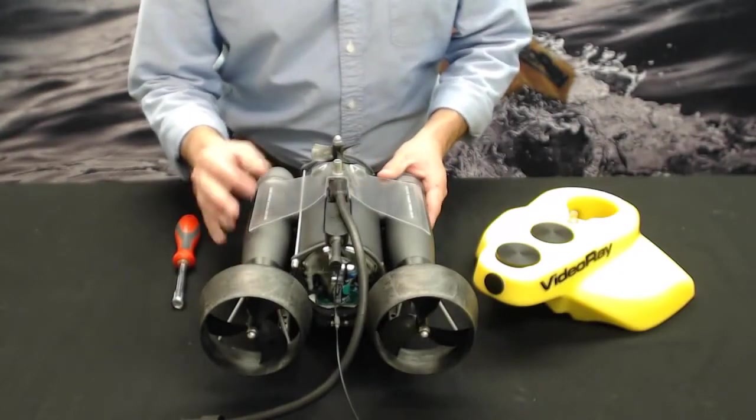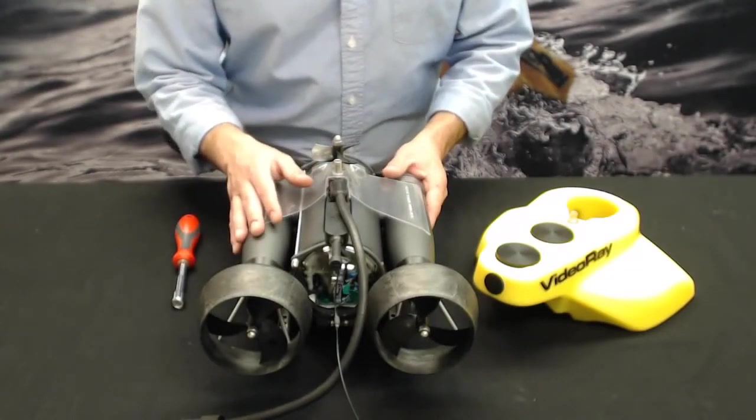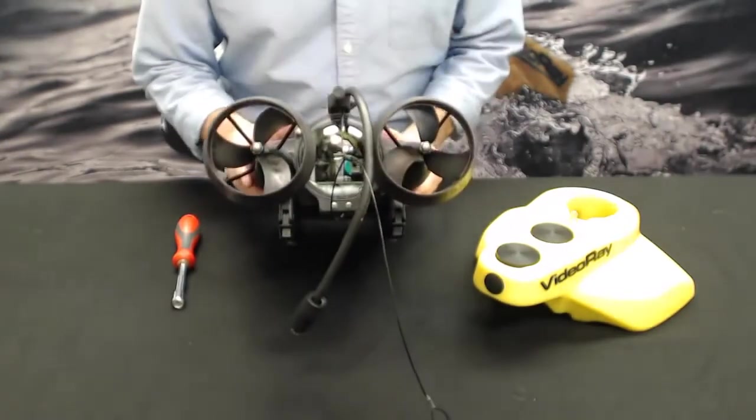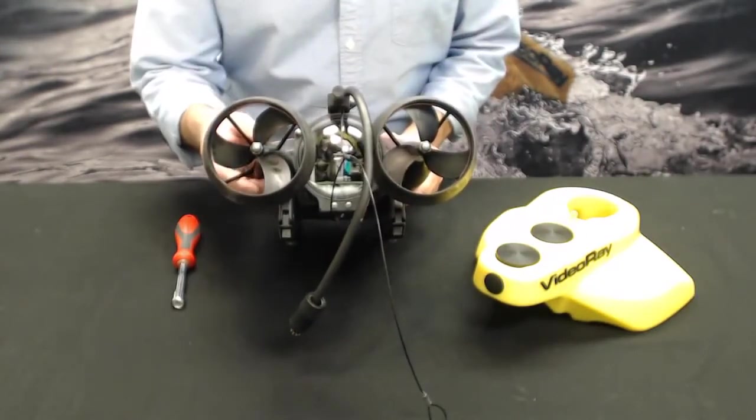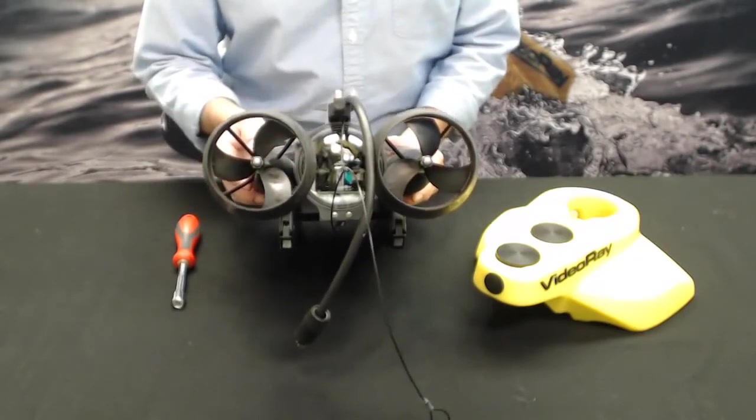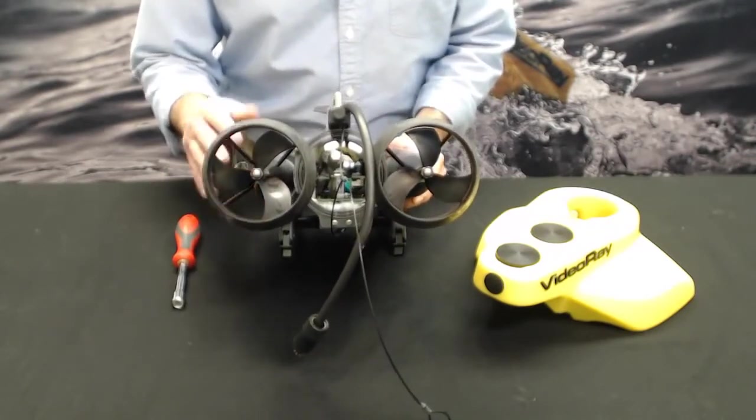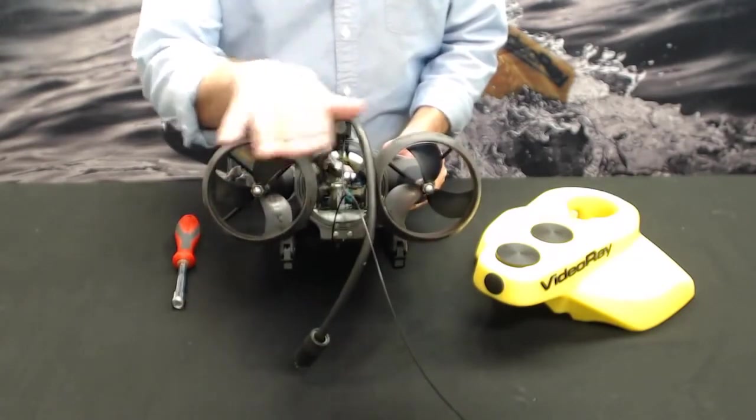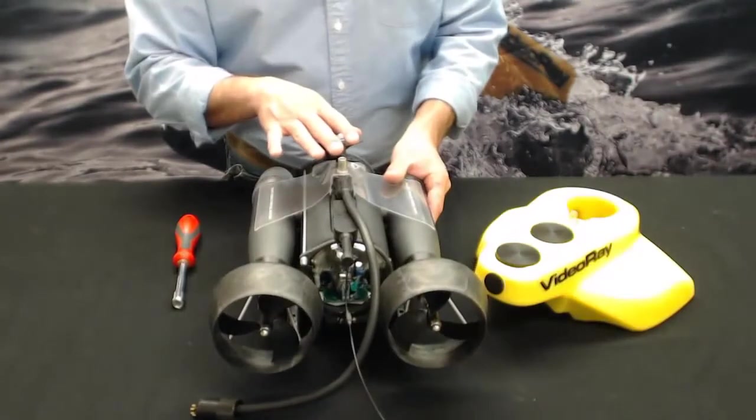All right, so I'd like to talk a little bit about the propellers on the VideoRay ROV Submersible. There are three propellers on the VideoRay Pro 4, and that's the same for all the models. The old Pro 3s, GTOs, Scouts, and Explorers all have two horizontal thrusters and one vertical thruster that controls depth.